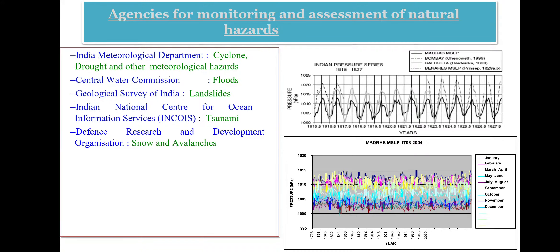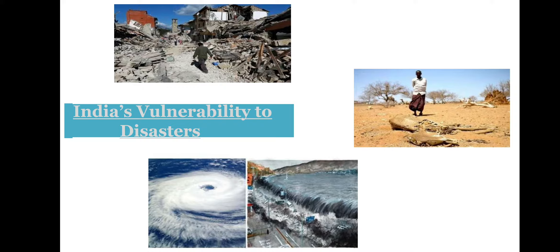India's vulnerability to disasters: 57% of land is vulnerable to earthquake, of which 12% is vulnerable to severe earthquake. 68% of land is vulnerable to drought, and 12% of land is vulnerable to cyclone. Apart from natural disasters, some cities in India are also vulnerable to chemical, industrial, and manmade disasters.